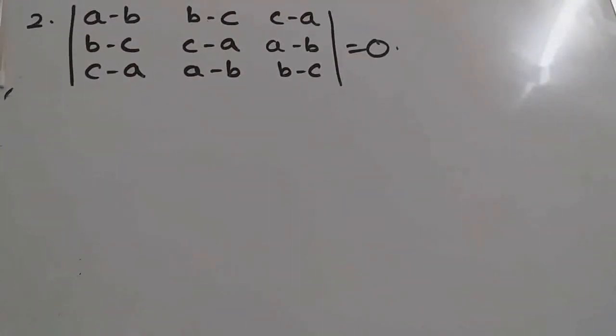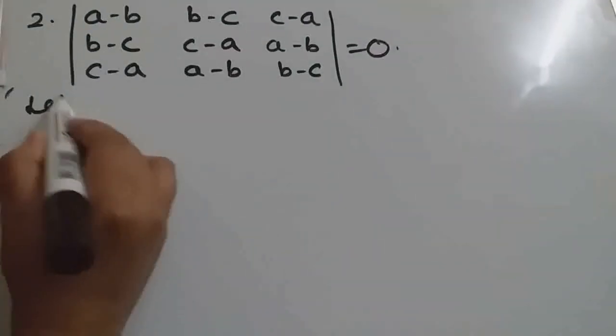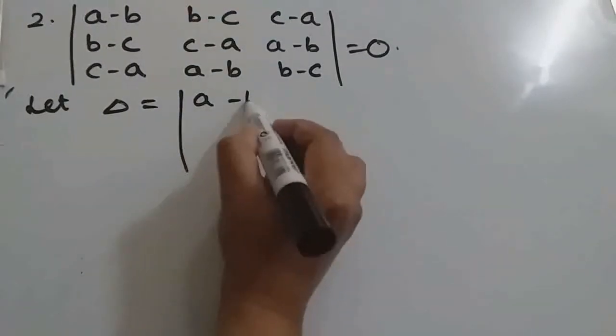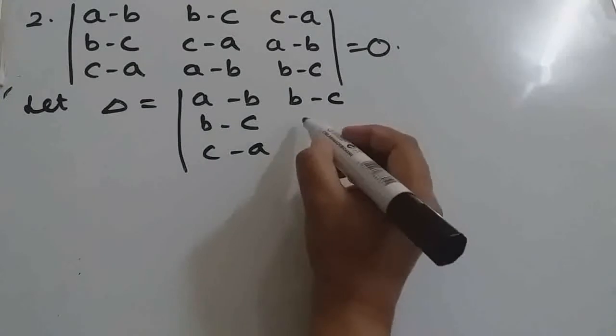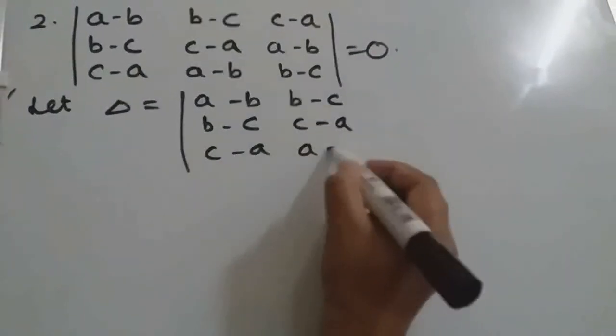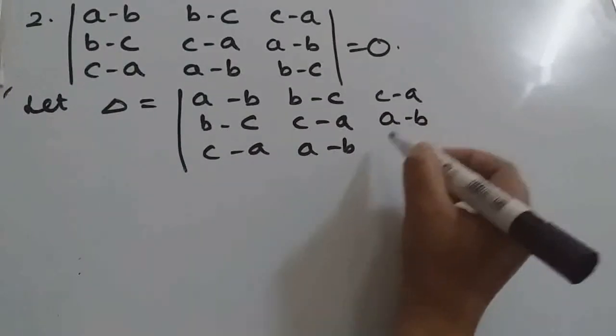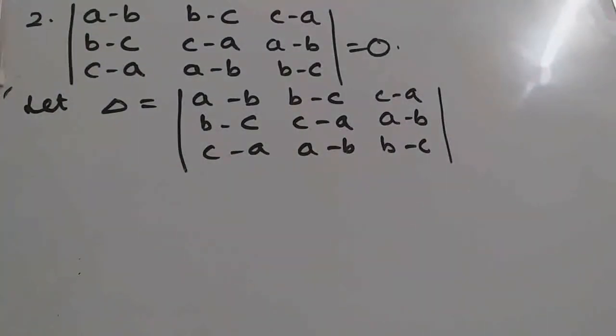Next question. Here also we should prove this determinant is equal to 0. So we will consider this determinant delta. Now we will use property 6. So what is property 6? If we do any row or column operation, this determinant value will remain unchanged here.